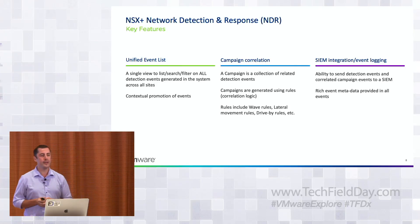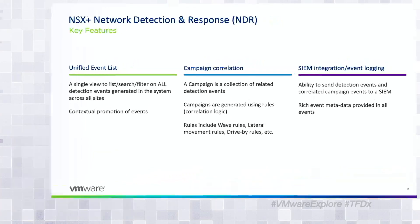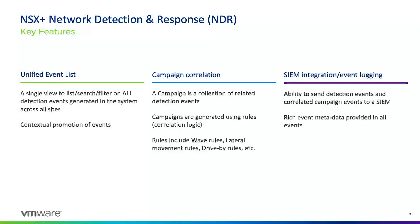The key features releasing today with NSX Plus NDR are: first, the unified event list — taking all atomic events and providing a single overview of all detection events across sites and projects. Second is campaign correlation, where we take atomic events and use correlation logic to determine which events belong together and whether they resulted in a successful attack. Third is SIEM integration — the ability to send atomic events and campaign events to a SIEM.